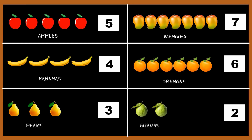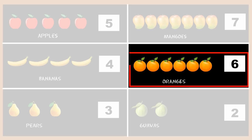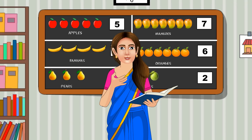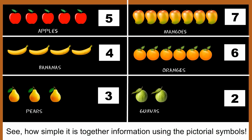Absolutely correct. Tell me, children, which fruit counts six in number? It is orange. Very good. See how simple it is to gather information using the pictorial symbols.